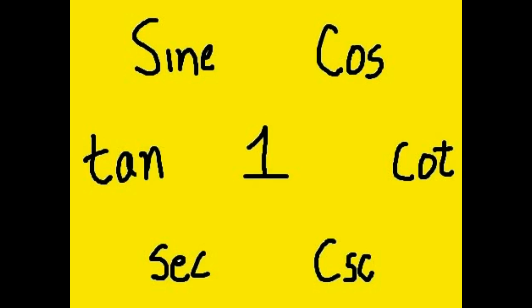Here are some trigonometric identities using the number seven. Sine, cosine, cotangent, cosecant — and now just take away the co, you get secant over here on the left. Take away the co, you get tangent on the left.